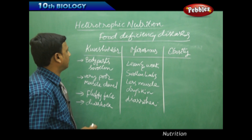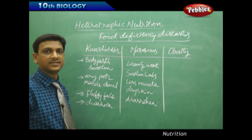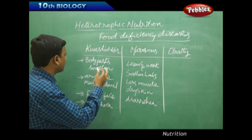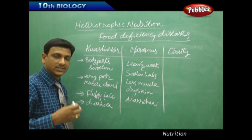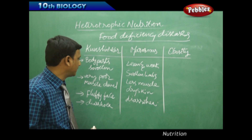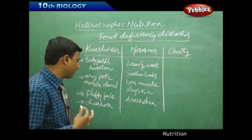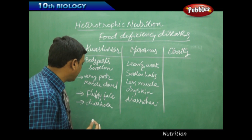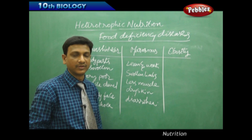Now let us look at some malnutrition deficiency diseases. Kwashiorkor is a deficiency disease caused due to the deficiency of proteins. Children facing protein deficiency in childhood have their body parts swollen due to water accumulated in the extracellular space. They have very poor muscle development, a fluffy face, difficulty eating, dry skin, and they may also suffer from diarrhea.